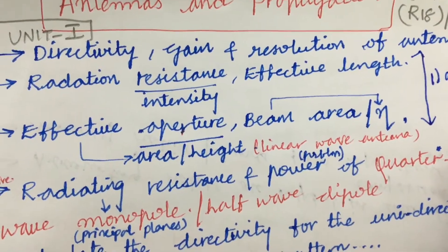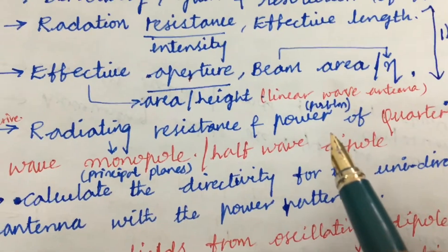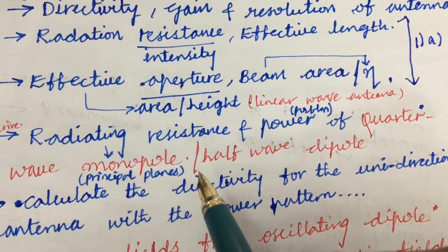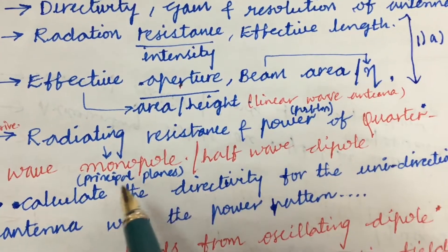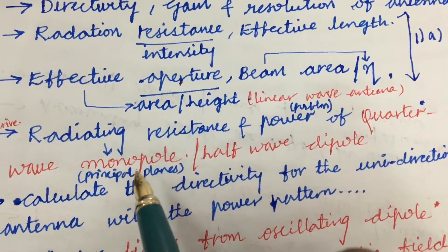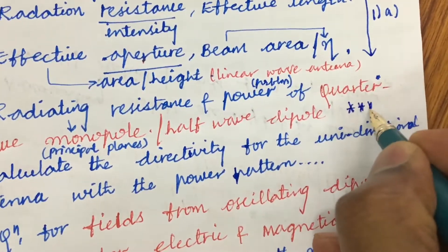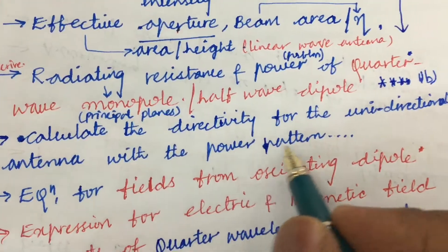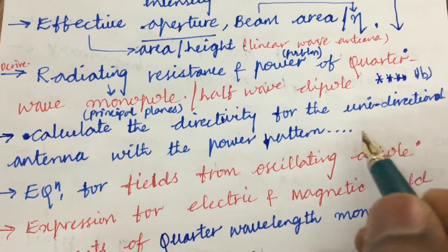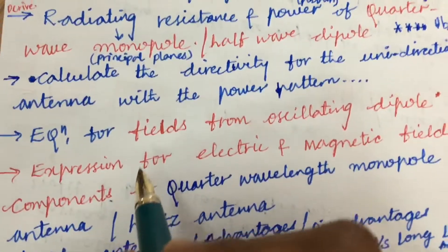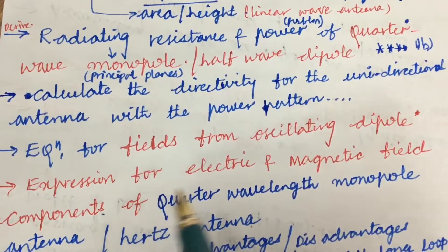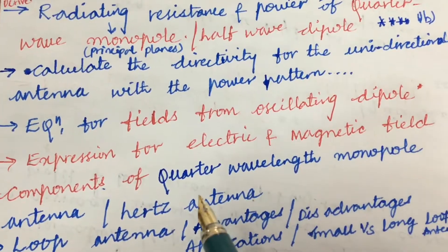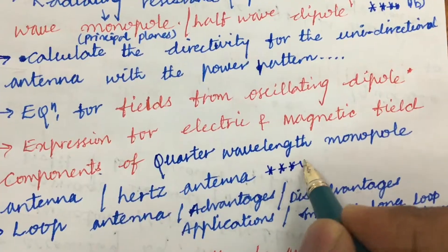The course is quite lengthy, so concentrate on the points I am focusing here. Deriving radiation resistance and power of a quarter-wave monopole and half-wave dipole, as well as radiation resistance of a monopole using principal planes, is a gunshot question for sure — likely a 1B question. Also, calculating directivity for a unidirectional antenna with a given power pattern, and the equation for fields from an oscillating dipole, along with expressions for electric and magnetic field components of a quarter-wavelength monopole and Hertz antenna, are also important gunshot questions.